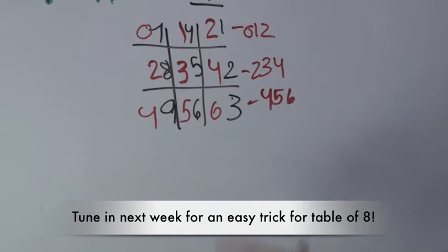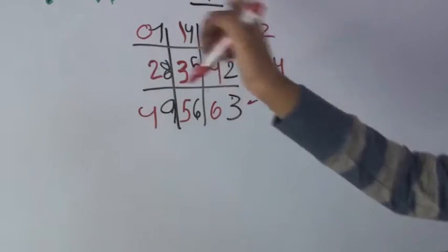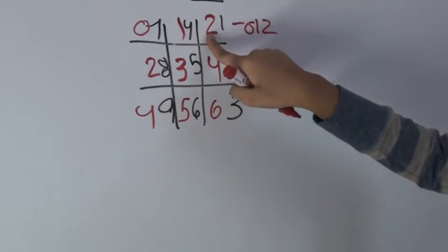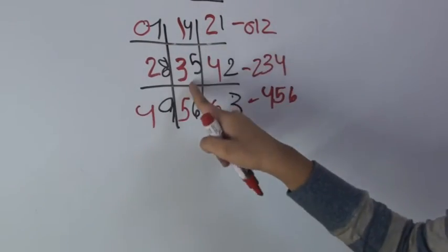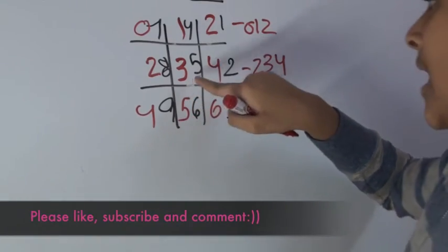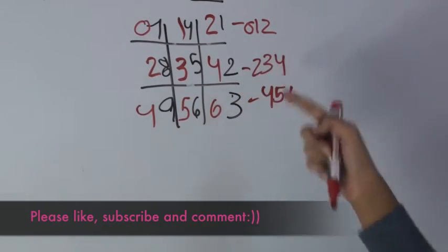So let's see if everything is right. One times seven, seven. Two times seven, fourteen. Three times seven, twenty-one. Four times seven, twenty-eight. Five times seven, thirty-five. Six times seven, forty-two.